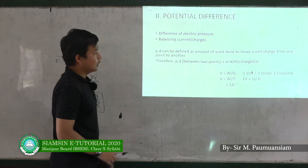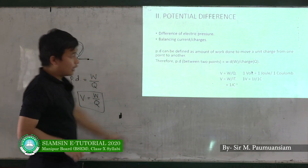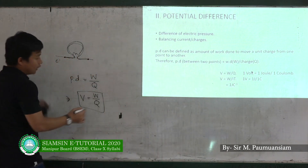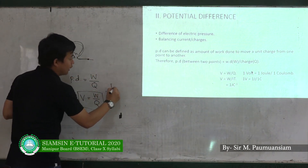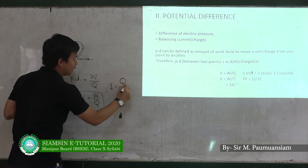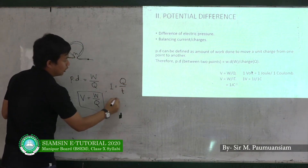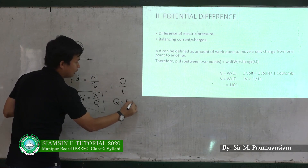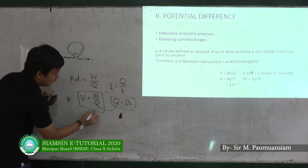Now, current I is equal to charge Q divided by time T, so Q is equal to I multiplied by T. This gives us Q = IT, which can be substituted into the potential difference formula.